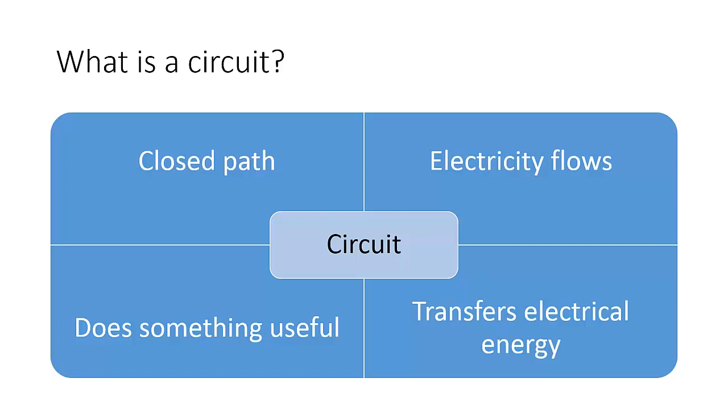So what is a circuit? The first thing is that it is a closed path. So it is a closed path that electricity can flow from one end all around the circuit and back to where it started from. So the key there is that it has to go back.